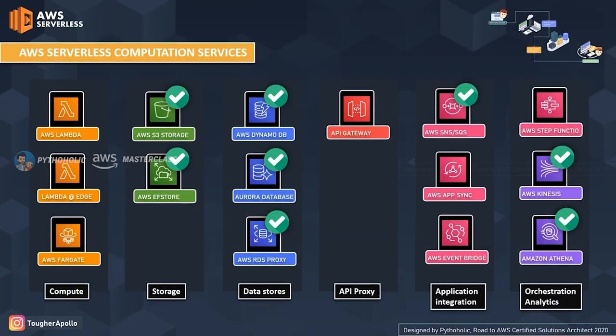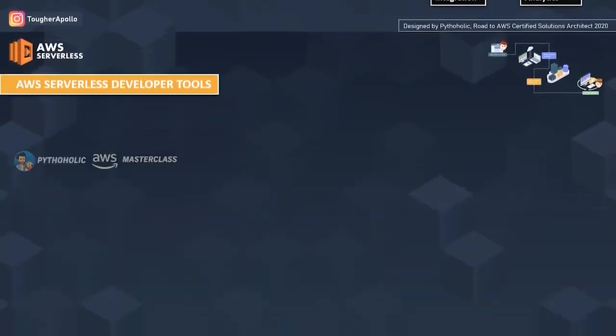With the evolution of AWS serverless, it was initially restricted to serverless compute using AWS Lambda. Now AWS has spanned serverless across multiple domains: compute includes AWS Lambda, Lambda@Edge, and AWS Fargate; storage includes AWS S3 and AWS EFS; data stores include AWS DynamoDB, Aurora, and RDS Proxy; API proxy includes API Gateway; application integration includes AWS SNS, SQS, AppSync, and AWS EventBridge; and orchestration and analytics include AWS Step Functions, Kinesis, and AWS Athena.